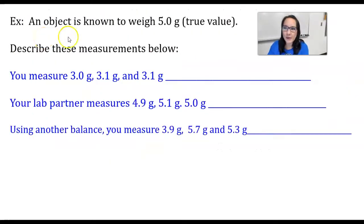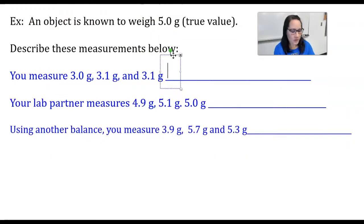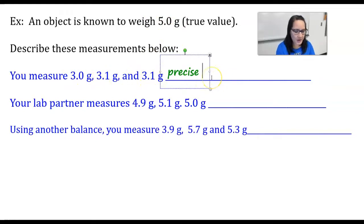Here's an example. An object is known to weigh 5 grams — that's the true value. If you measure 3.0, 3.1, and 3.1 grams, how would you describe those measurements? They're close to each other, so you'd call them precise. But they're not close to the true value of 5.0, so they're precise but not accurate.